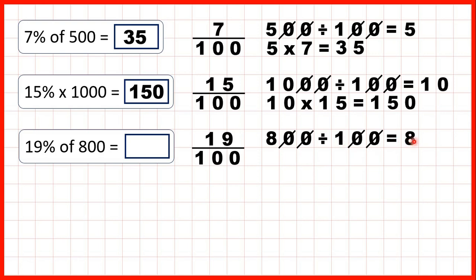So now we need to take that 8 and multiply it by the numerator, so we need to work out 8 times 19. 9 times 8 is 72, so 7, 2. 1 times 8 is 8, plus 7 is 15. So we have 152 as our answer.